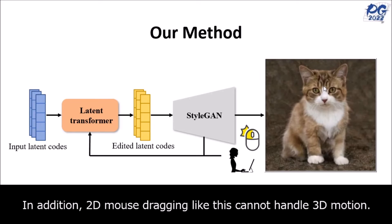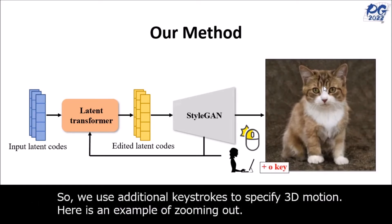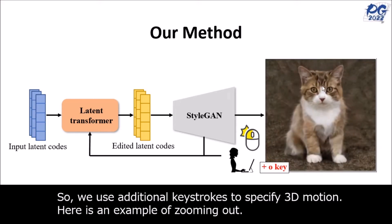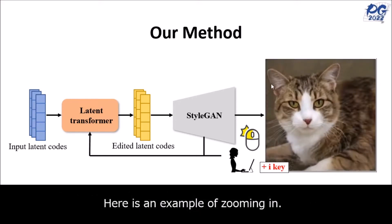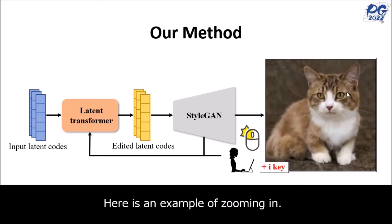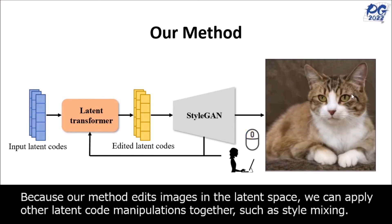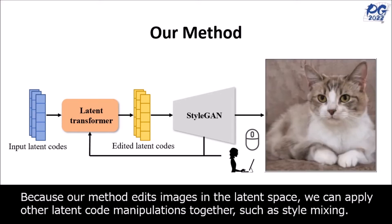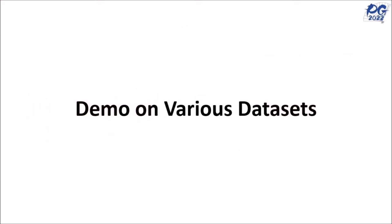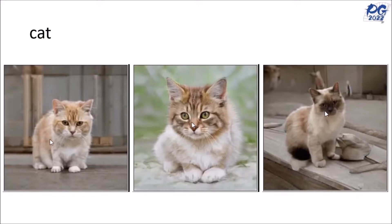The primary objective of User Controllable LT is to provide users with a user-friendly interface to modify specific characteristics of a generated image. This is achieved by leveraging the latent space representation of StyleGAN, where different factors of variation in the data are encoded into separate dimensions. By manipulating the latent vector, users can control aspects such as the pose, expression, or appearance of a person's face, or the style of an object or background.